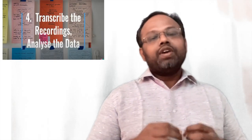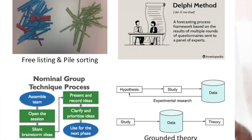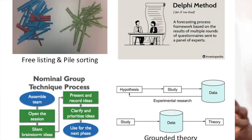For analysis, there are many methods of qualitative analysis. The most commonly used method is the free listing and pile sorting method, where you cut all pieces of information, put them together from the topic, collate that information, and give it a different structure. That is the first method: free listing and pile sorting.